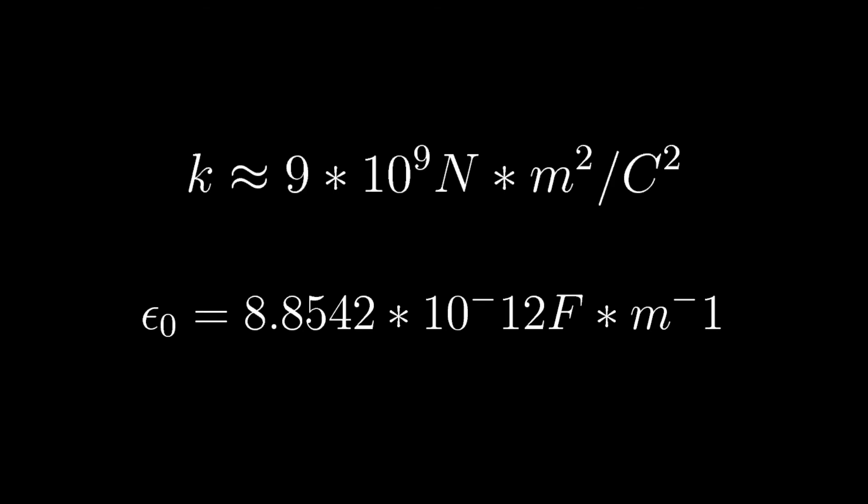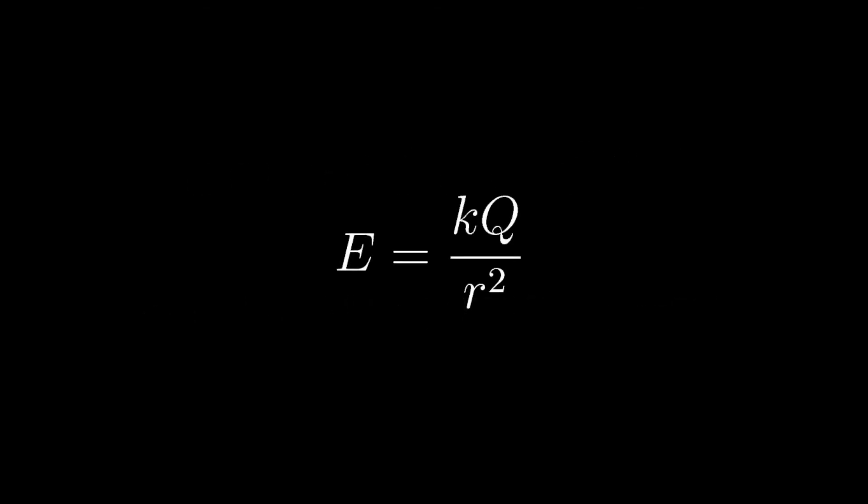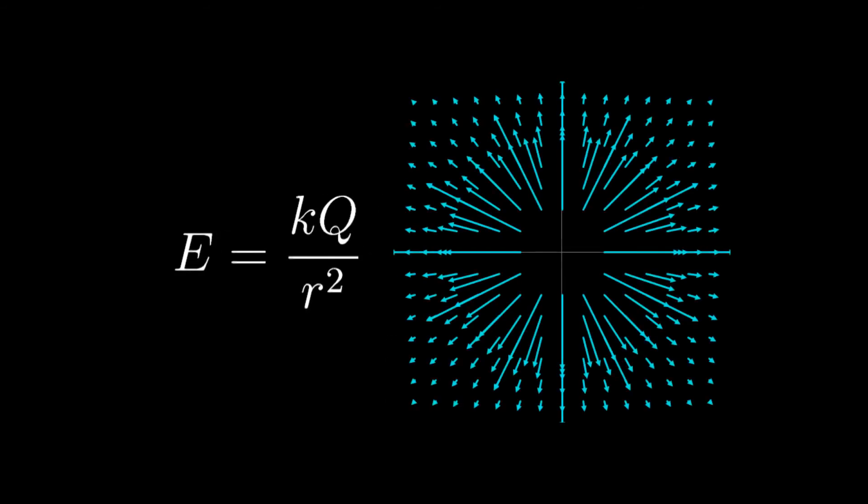So going back to our final expression, we get that the strength of the electric field is equal to k times capital Q over r squared. Going back to the point that I made earlier, we see that the electric field is only dependent on two things: the strength or size of the source charge and the distance between the source charge and the field point or where a test charge could be placed. We see that the electric field can change from point to point depending on the distance. The electric field isn't a single vector but a collection of vectors. It's a vector field.